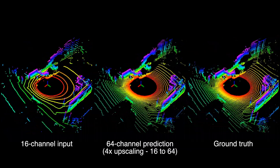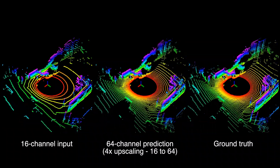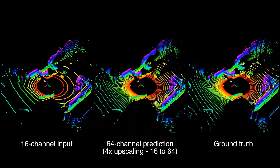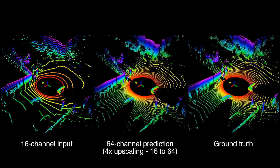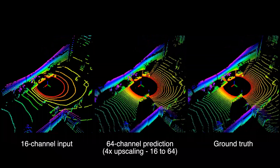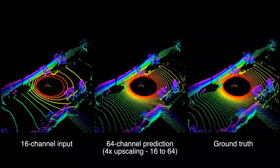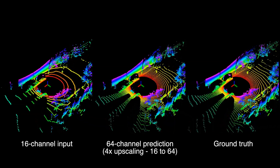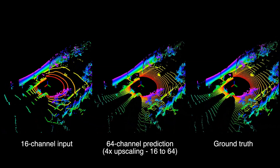The point cloud shown on the left is the extracted 16-beam data, which is then sent to the neural network. The high-resolution point cloud in the middle is the output of the neural network. The point cloud on the right is the ground truth from the real LiDAR.